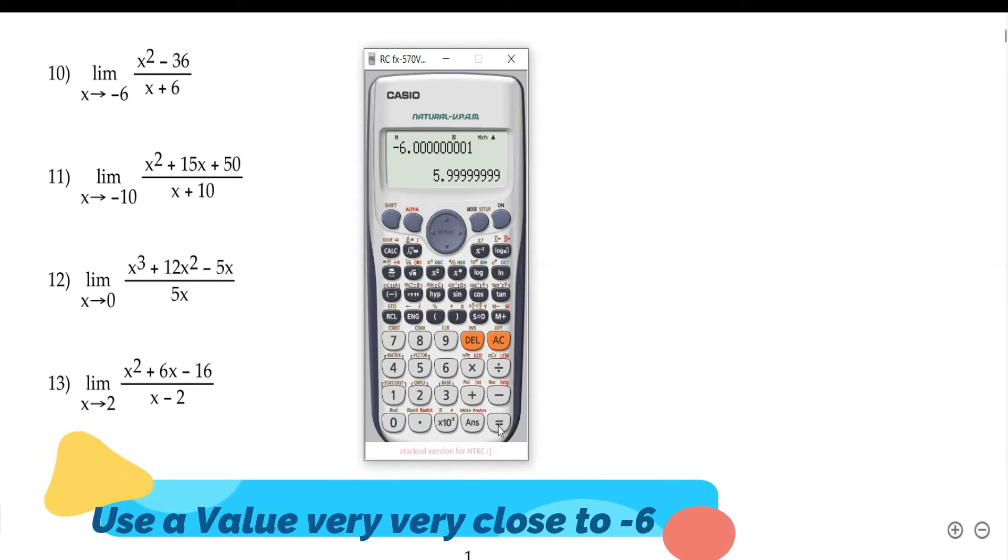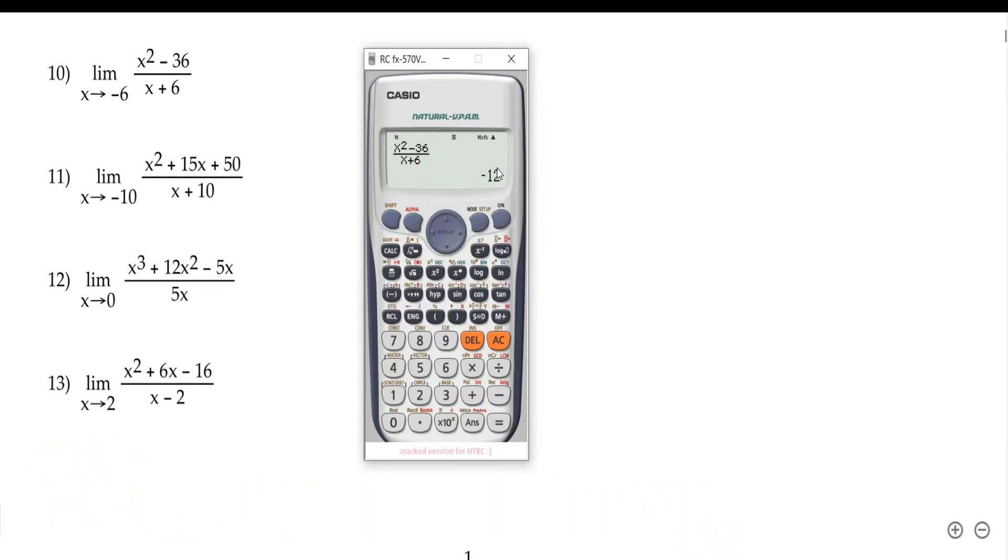Let's close to negative 6.001. And then it will give us negative 12.001. If you don't believe this answer, let's check it out.